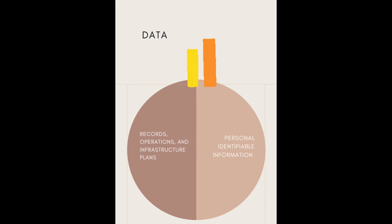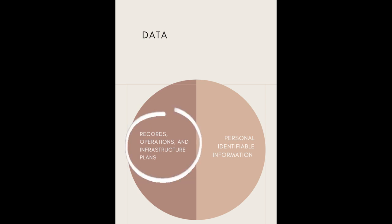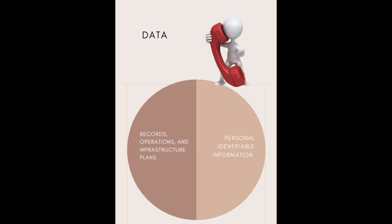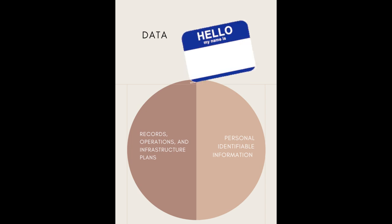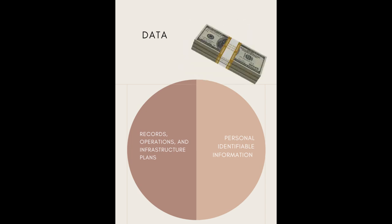The second objective is data. There are two types of data: personal identifiable information and records, and operations and infrastructure plans. To get data, adversaries will employ threats such as getting documents that are secret, personal information, or using data as the first step to another attack. They will also hold data as hostage for money.